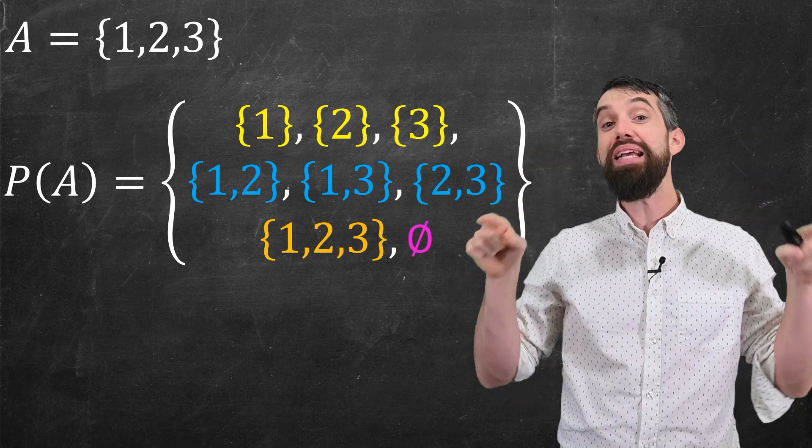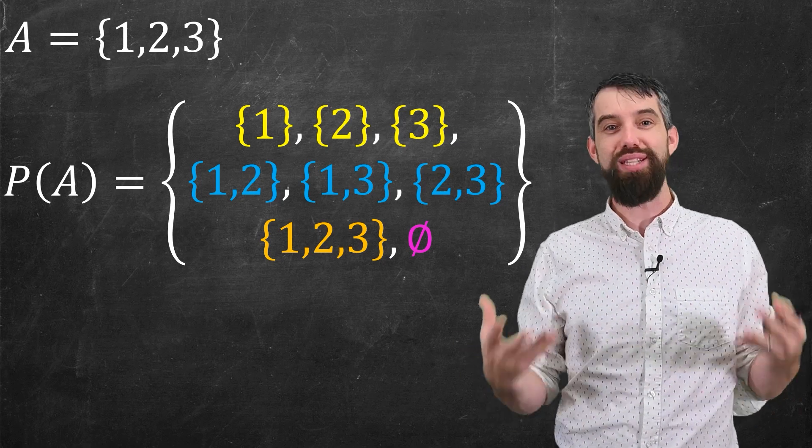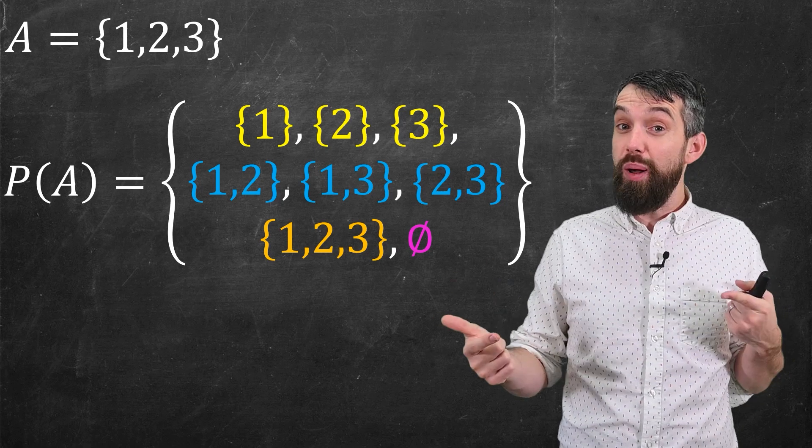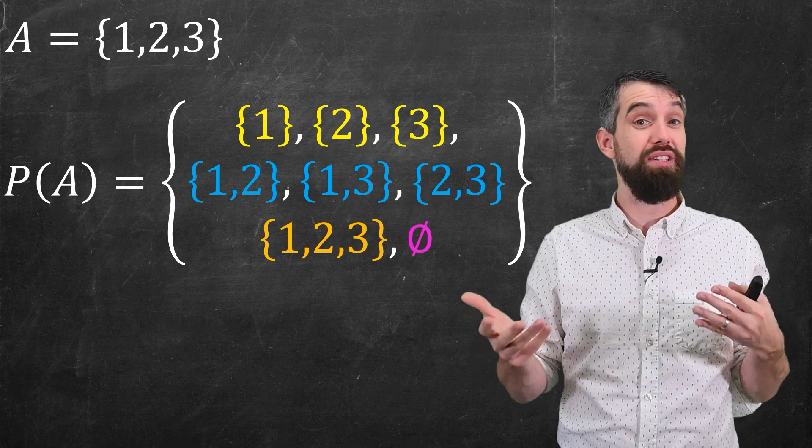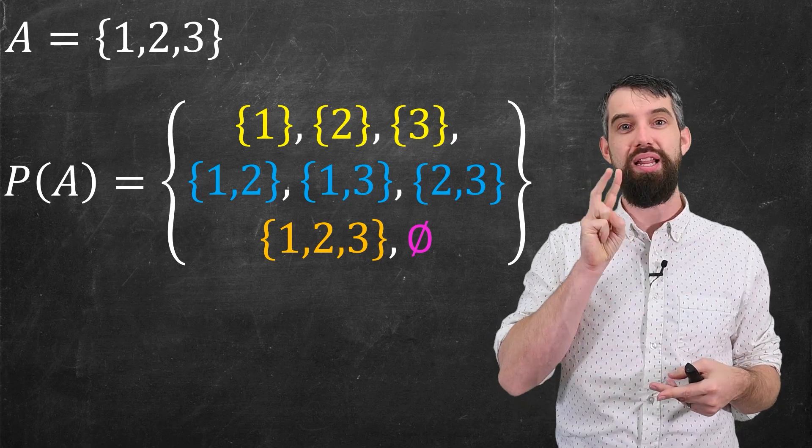Note that this is one big set on the outside, and then the thing inside of it is other sets. It's like a big box that has smaller boxes on the inside. And the possible things inside those smaller boxes, well, I could have the three different types of singleton sets with just one element, the set containing one, the set containing two, and the set containing three.